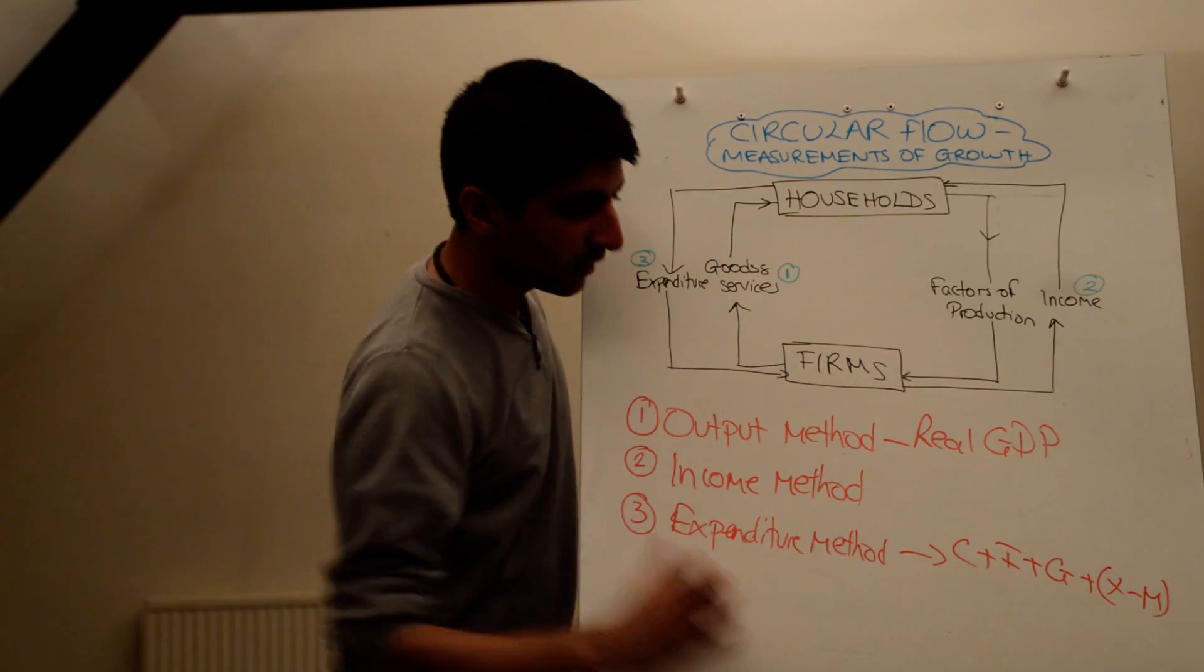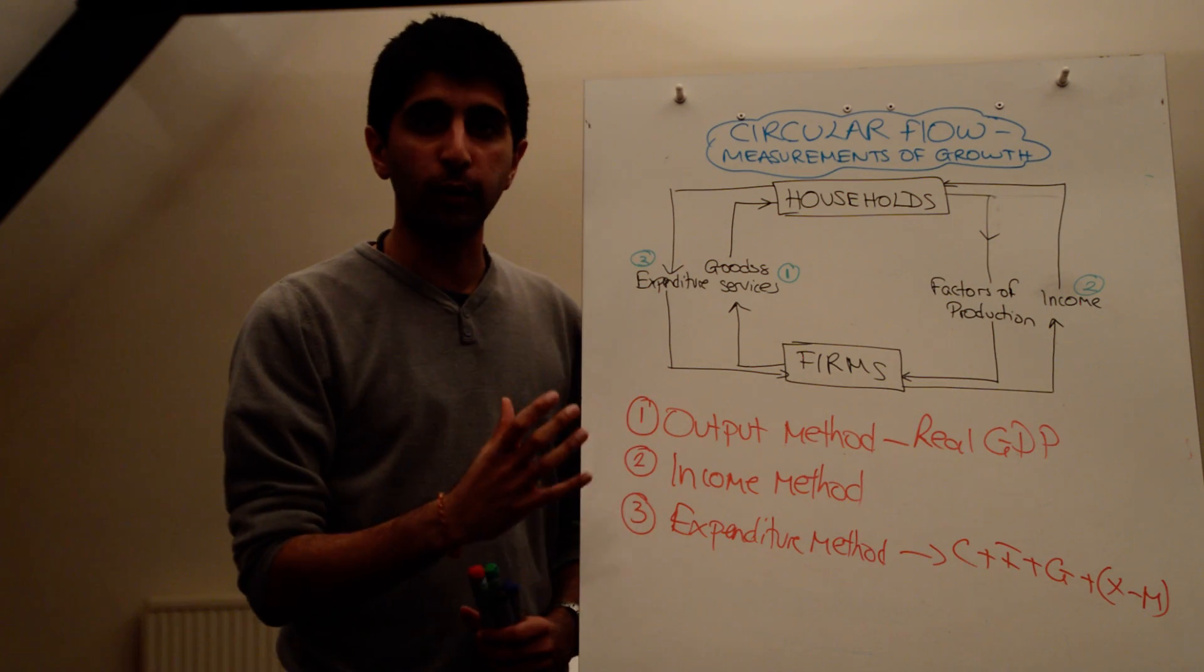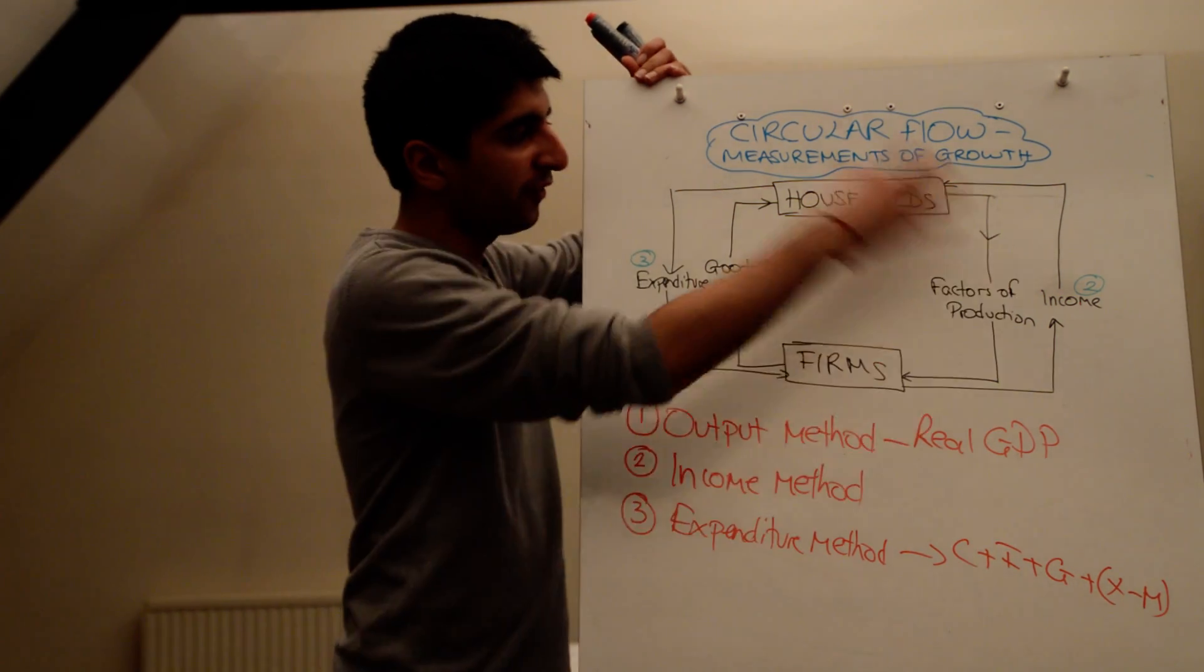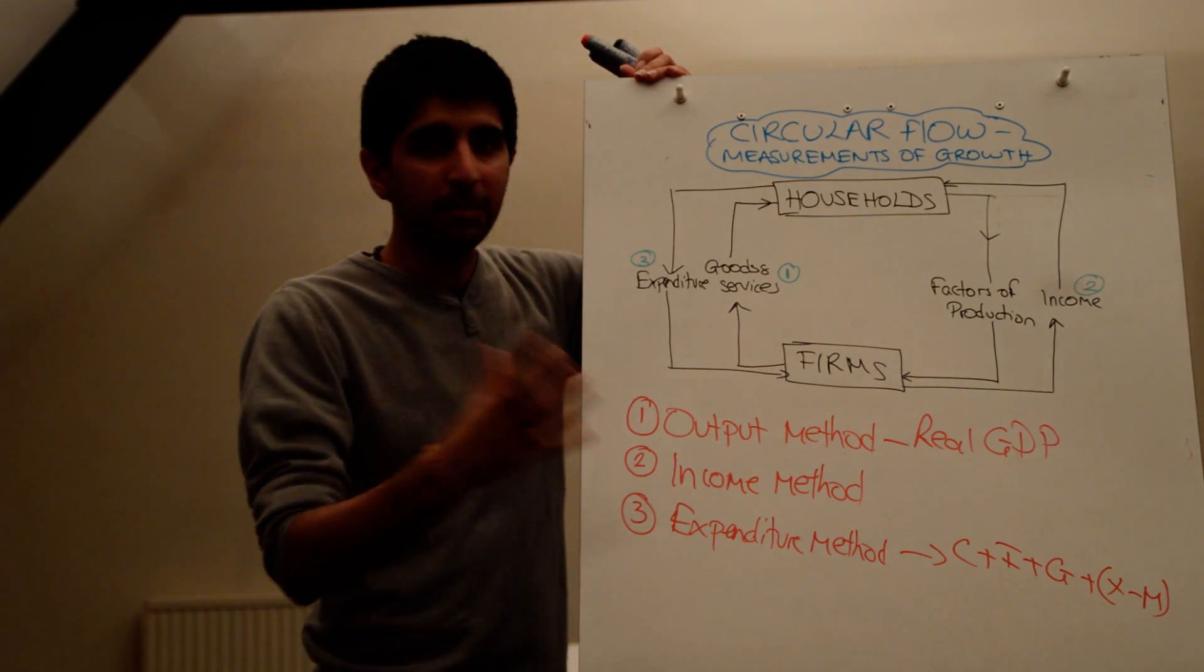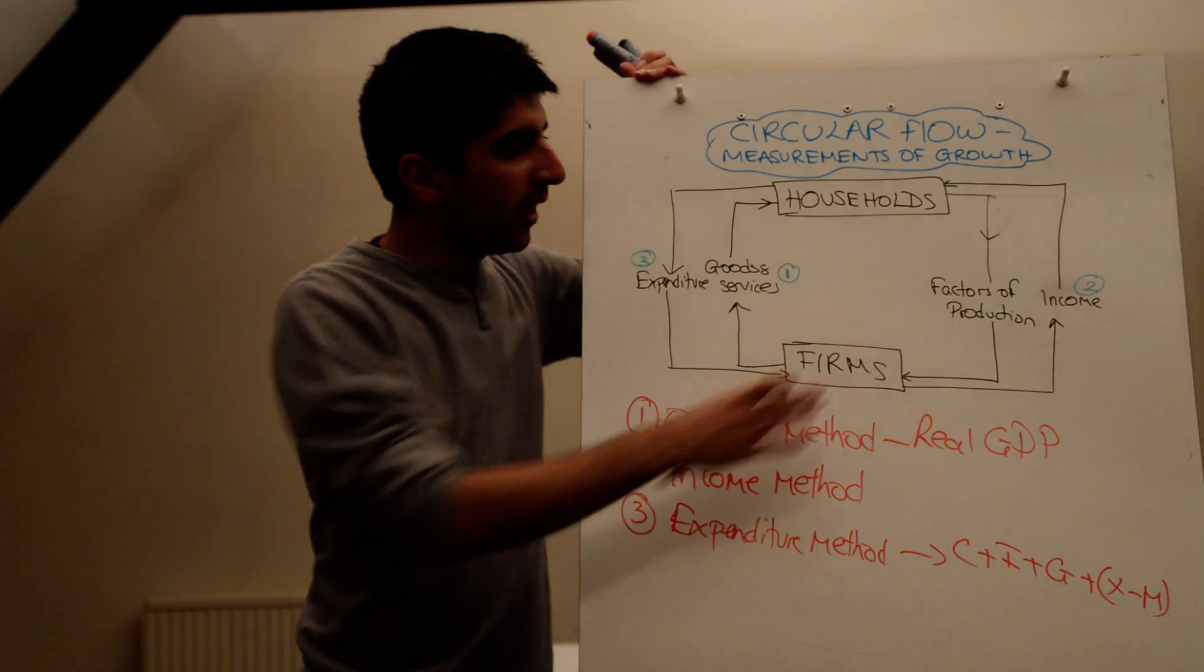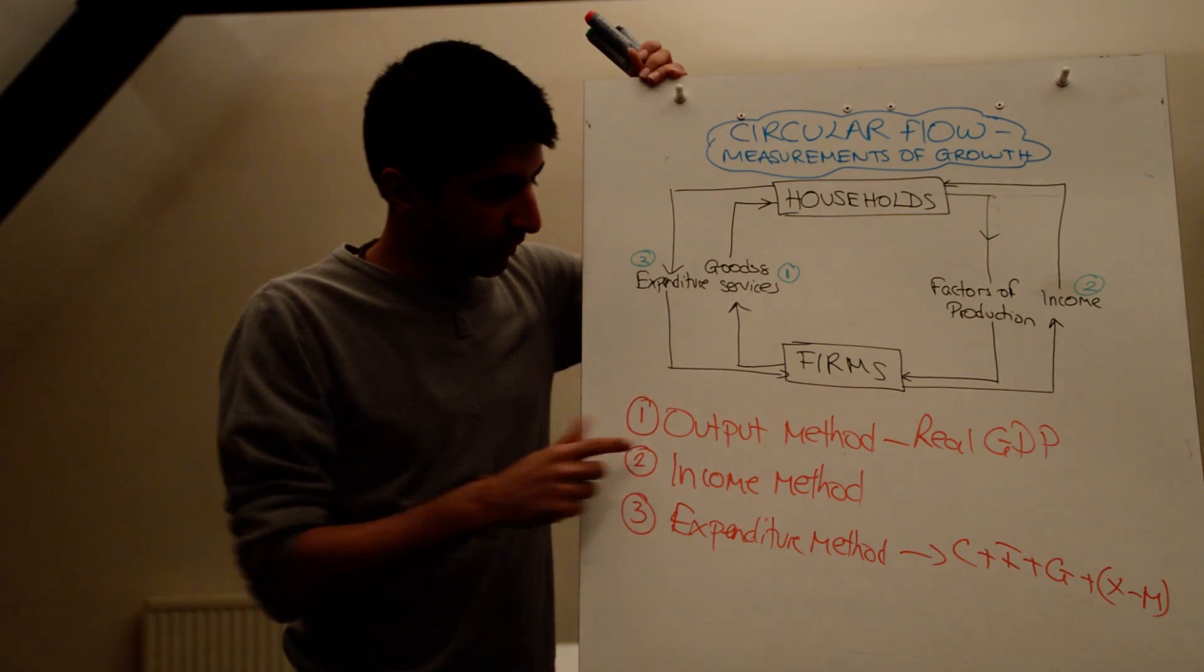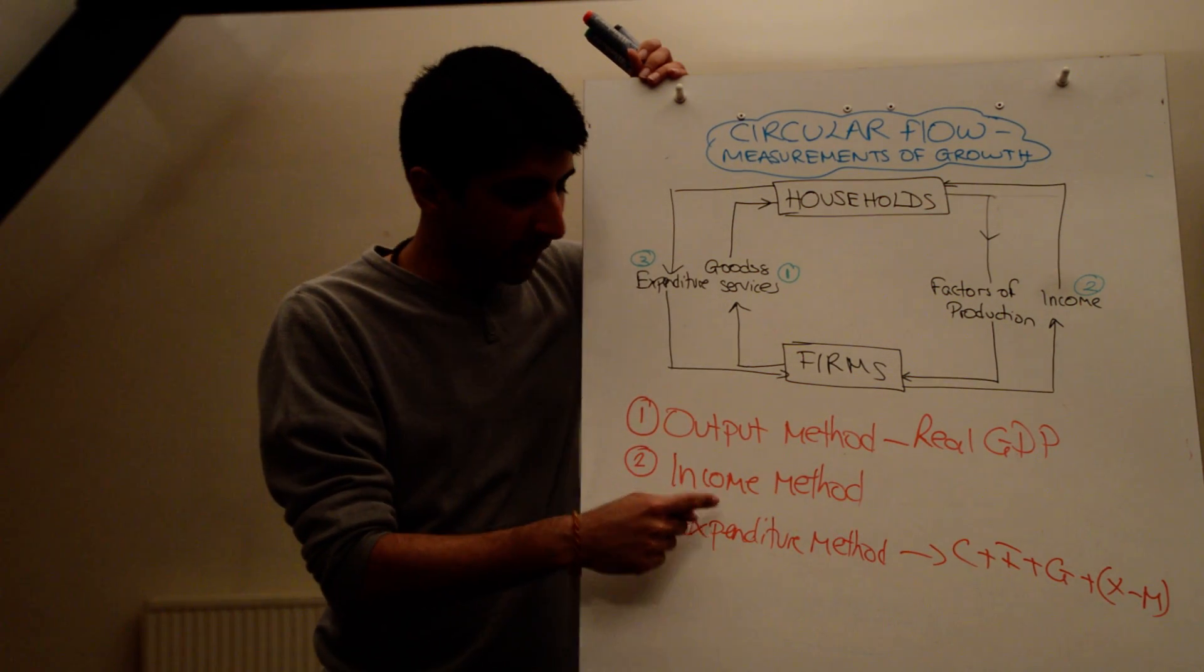So all of these three things can be used to measure economic growth. Really, because they're all part of the same flow, and the flow has got a certain speed, you know, one basic speed, if you measure any one of these three things, you will get the same figure. So output equals income equals expenditure.